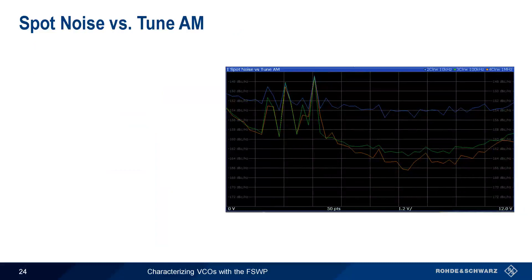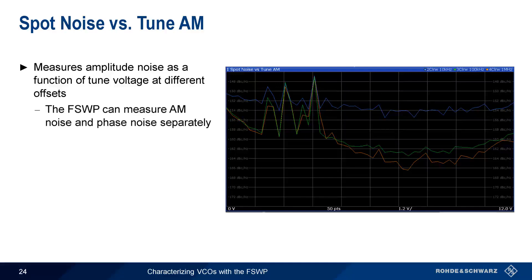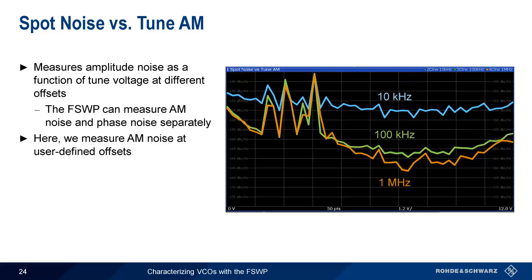These same parameters will need to be configured when making a spot noise versus tune AM measurement, which measures AM — or amplitude noise — as a function of tune voltage at different offsets. The architecture of the FSWP allows it to measure amplitude noise separately from phase noise. In this measurement, we're measuring and plotting amplitude noise at different user-defined offsets from the carrier — here at 10 kHz, 100 kHz, and 1 MHz. Note that AM noise is typically much smaller than phase noise.